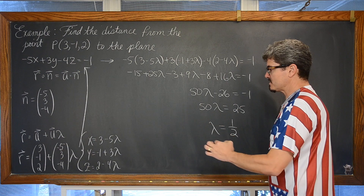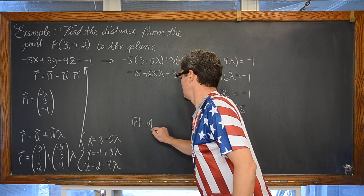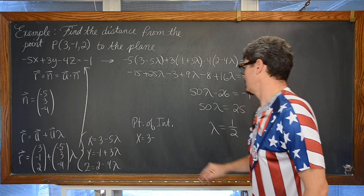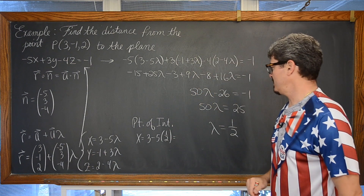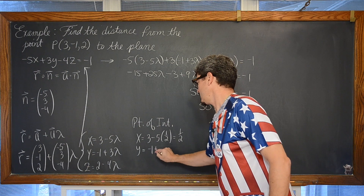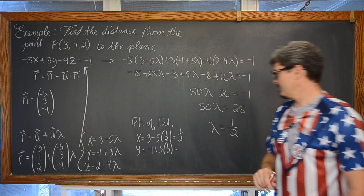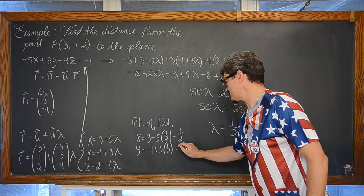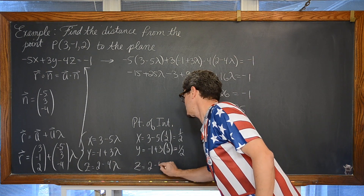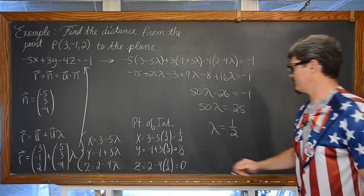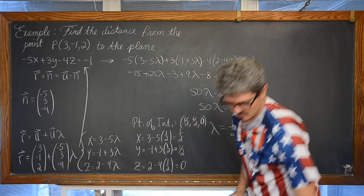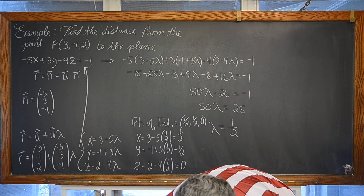The point of intersection is found by substituting lambda equals one half into the parametric equations: x equals 3 minus 5 times one half, which is 6/2 minus 5/2 equals one half. y equals negative 1 plus 3 times one half, which is negative 2/2 plus 3/2 equals one half. z equals 2 minus 4 times one half, which is 2 minus 2 equals 0. So the intersection point is (1/2, 1/2, 0).